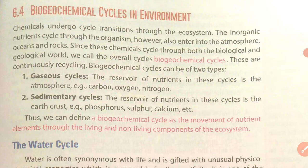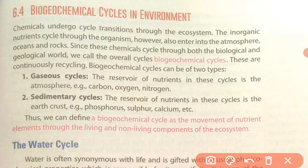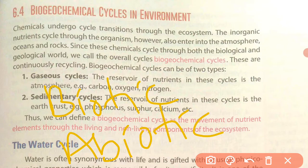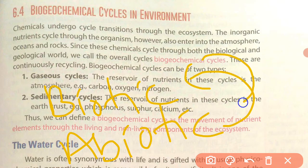Before talking about the water cycle, let us understand what a biogeochemical cycle is. As you know, our world has two components: one is the living component, called the biotic component, and the other is the non-living component, called the abiotic component. All the matter and biomolecules necessary for life — like water, carbon dioxide, oxygen, phosphorus, sulfur, nitrogen, and carbon — these substances circulate and move between the abiotic and biotic components. This movement forms a cyclic pattern, which we call the biogeochemical cycle.